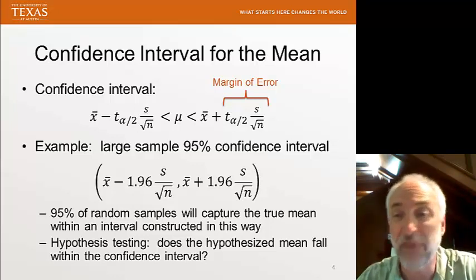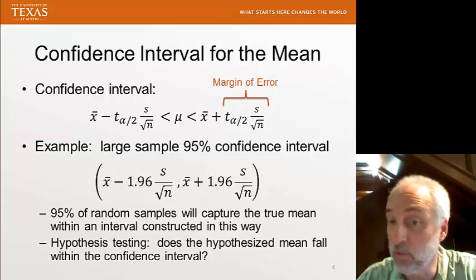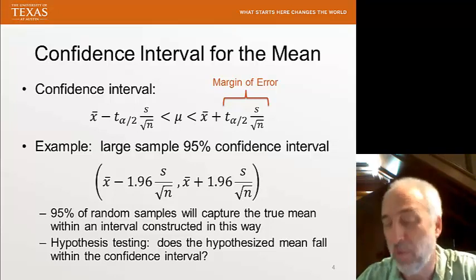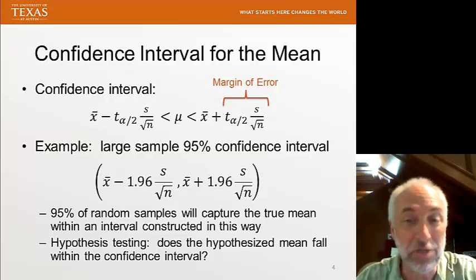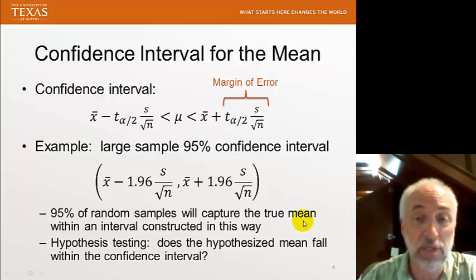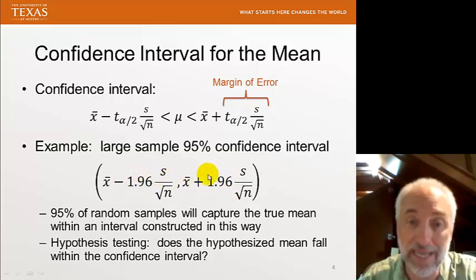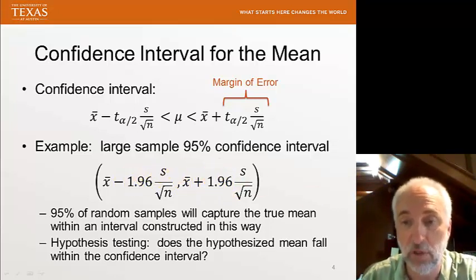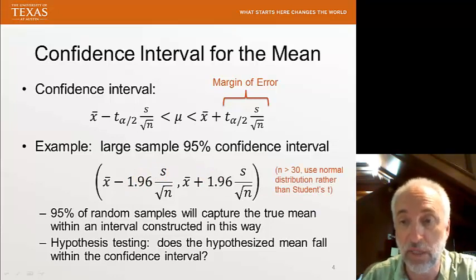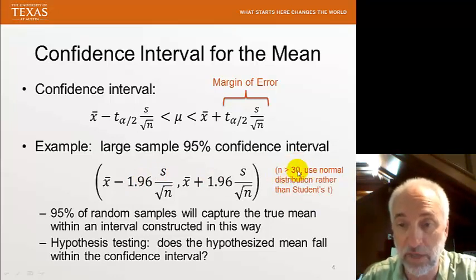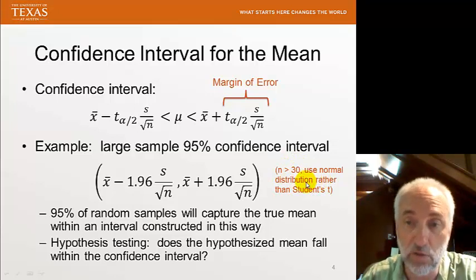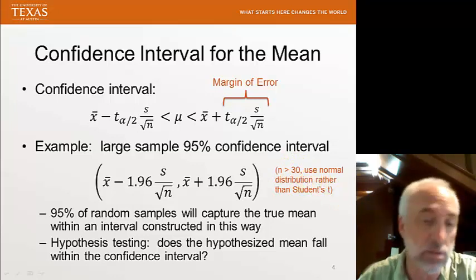Here's an example using a large sample, where my t alpha over 2 becomes z alpha over 2. For a 95% confidence interval, that number is 1.96, or about 2. Generally, you don't need much more precision than using the number 2. But, if we stick 1.96 in here, then I have the 95% confidence interval, assuming that n is bigger than about 30, so that we can use the normal distribution rather than the student's t distribution.